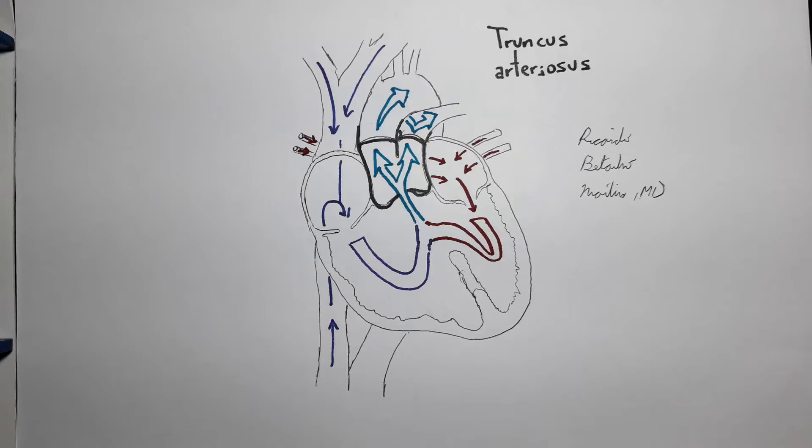Therefore, persistent truncus arteriosus is classified as a cyanotic congenital heart disease. Amongst the cyanotic congenital heart diseases, it's classified as a cyanotic disease which increases pulmonary blood flow.